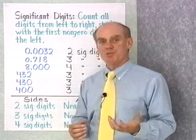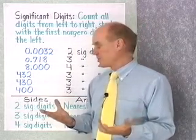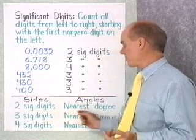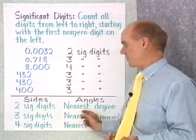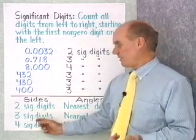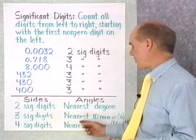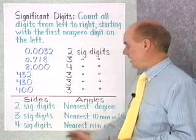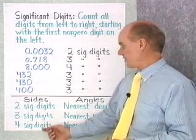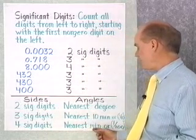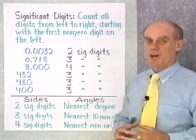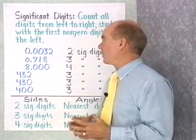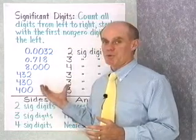When we talk about the relationship between the sides in a triangle and the angles in the triangle, we use this: if the sides have two significant digits, we round our angles to the nearest degree. If the sides have three significant digits, we work with angles to the nearest ten minutes or one-tenth of a degree. Four significant digits on the sides means we work to the nearest minute or nearest one-hundredth of a degree.